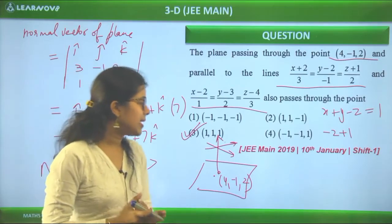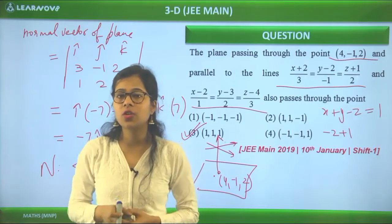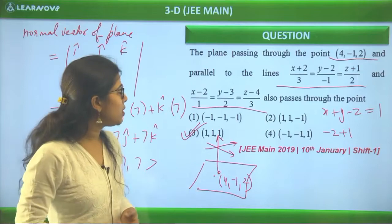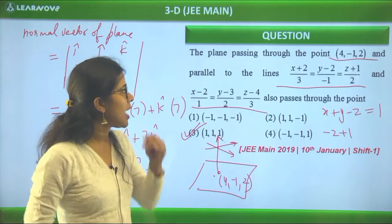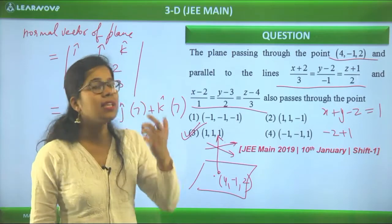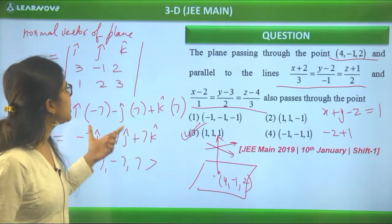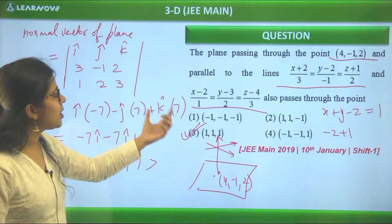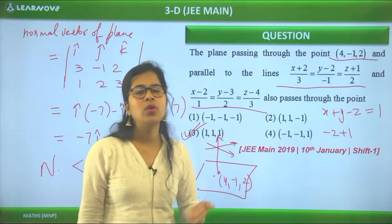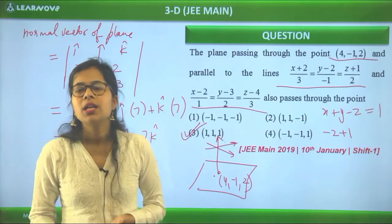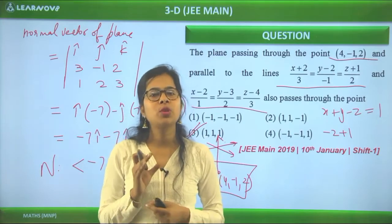This is a moderate level question — actually it's easy, because once you understand that if you have two lines, you just need to visualize the 3D geometry: the cross product of the two direction vectors gives you the normal to the plane, and then you can write the plane equation directly.